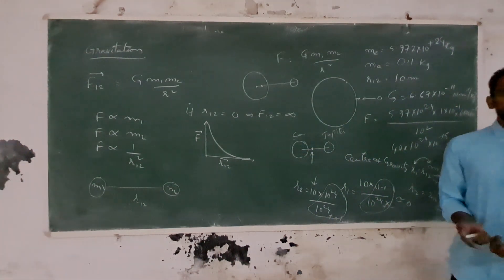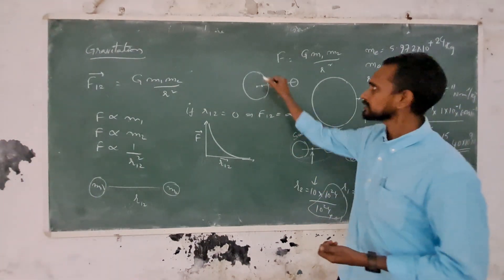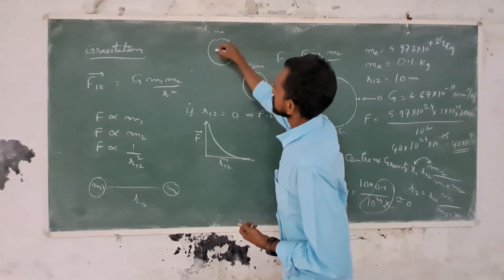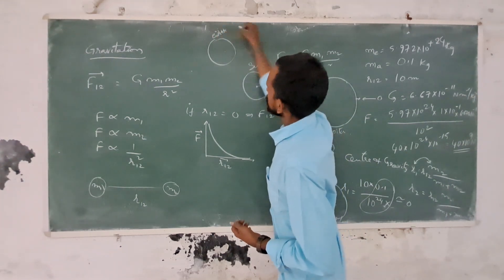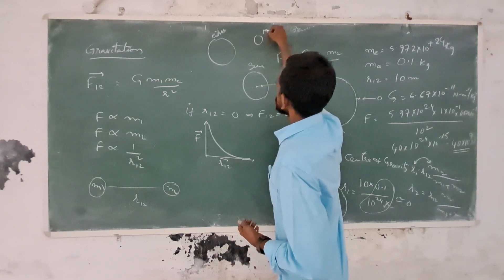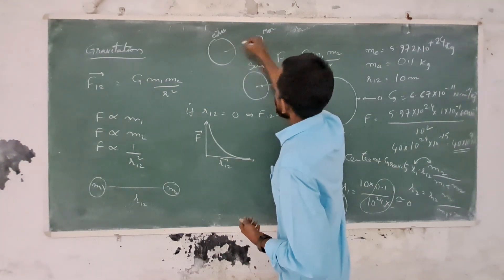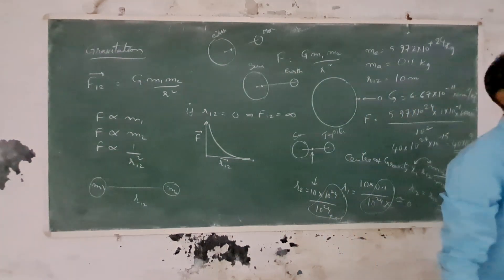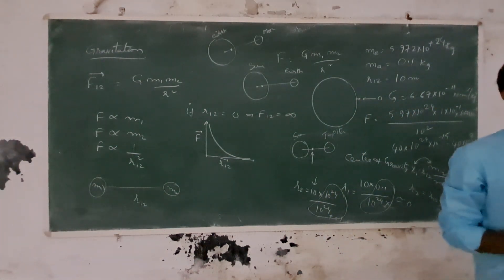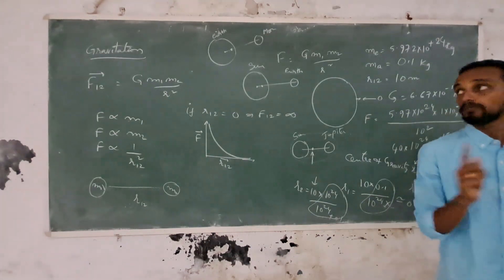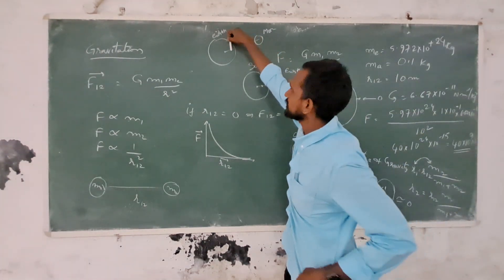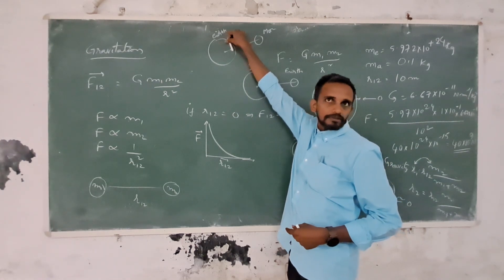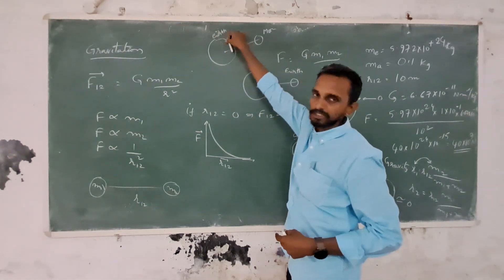Similarly, for the Earth and Moon system, the center of gravity lies within the Earth. The Earth's shape is slightly shifted above this point. The center of gravity is shifted a little.